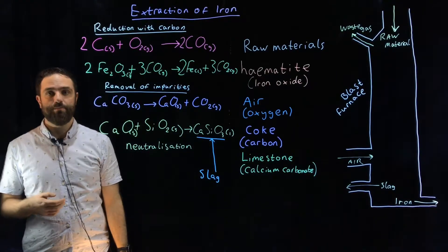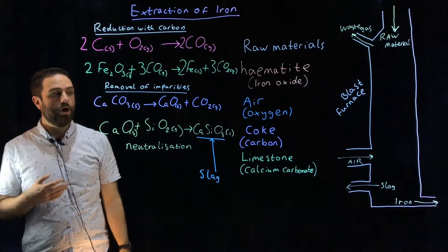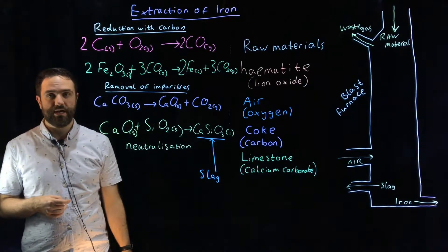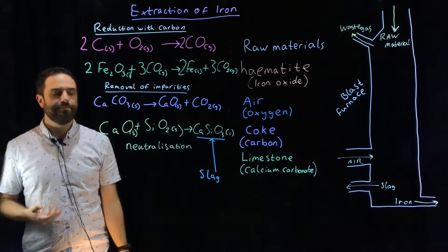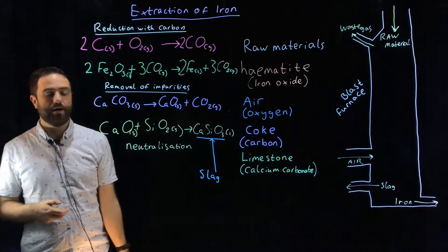We still need to remove our impurities. The majority of the impurities in hematite are in the form of silicon dioxide also known as sand or silica. How do we get rid of that? Well that's where the calcium carbonate comes in.